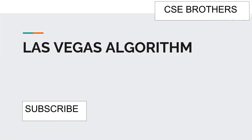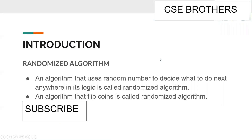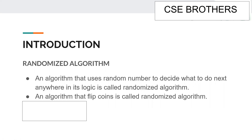To start with the Las Vegas algorithm, I will first introduce randomized algorithms. A randomized algorithm is an algorithm that uses random numbers to decide what to do at any point in its logic. We will understand it with an example.